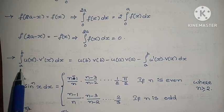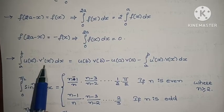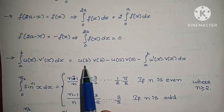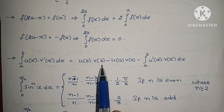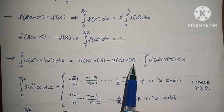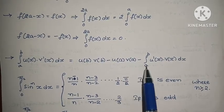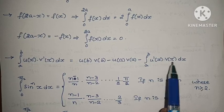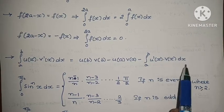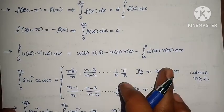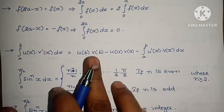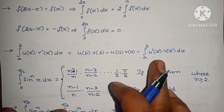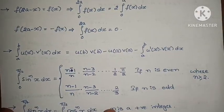Integration by parts for definite integrals: Integral a to b of u(x) v'(x) dx equals [u(b) v(b) minus u(a) v(a)] minus integral a to b of u'(x) v(x) dx. Same formula as indefinite IBP but first apply upper limit minus lower limit, then the integration part remains the same.